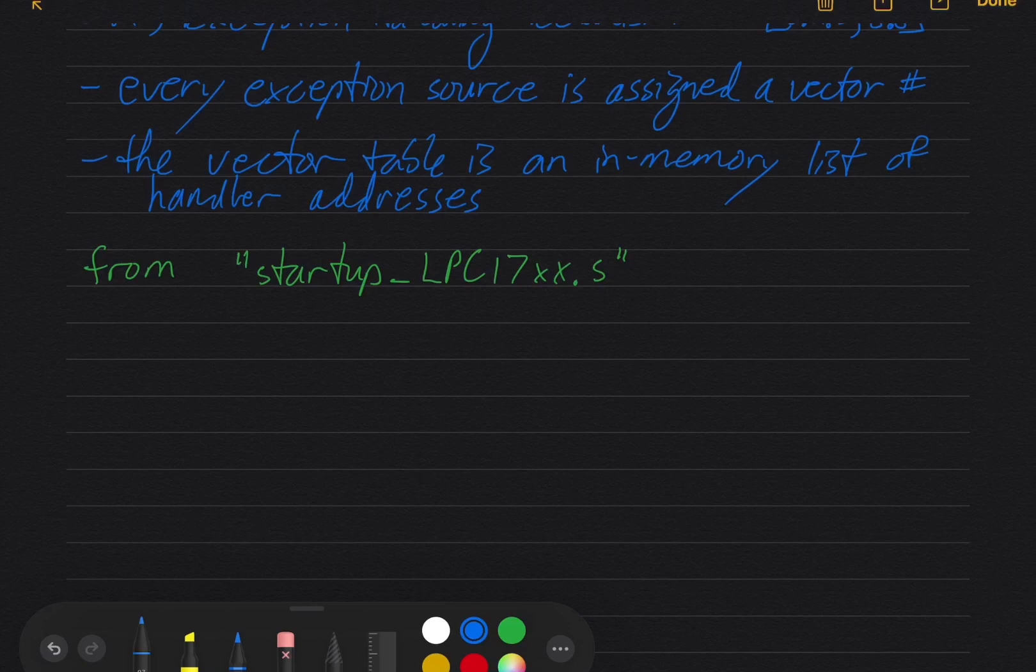The table is defined in assembly language by declaring a bunch of values, and it uses the assembler pseudo-instruction dcd, declare data. If you look there, you'll see a bunch of them, including the reset handler and the NMI handler that I'm going to show you now.